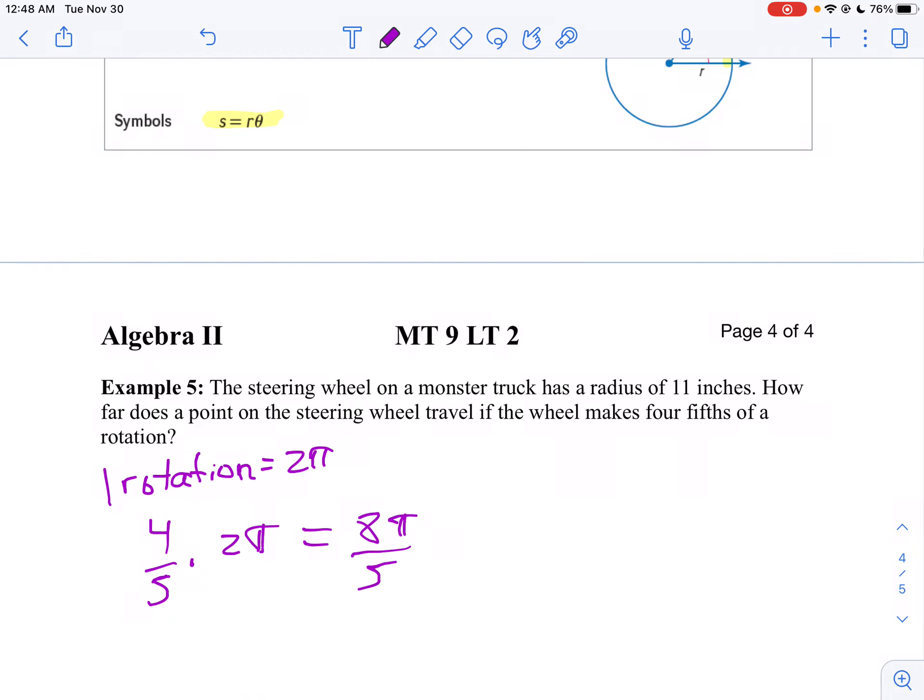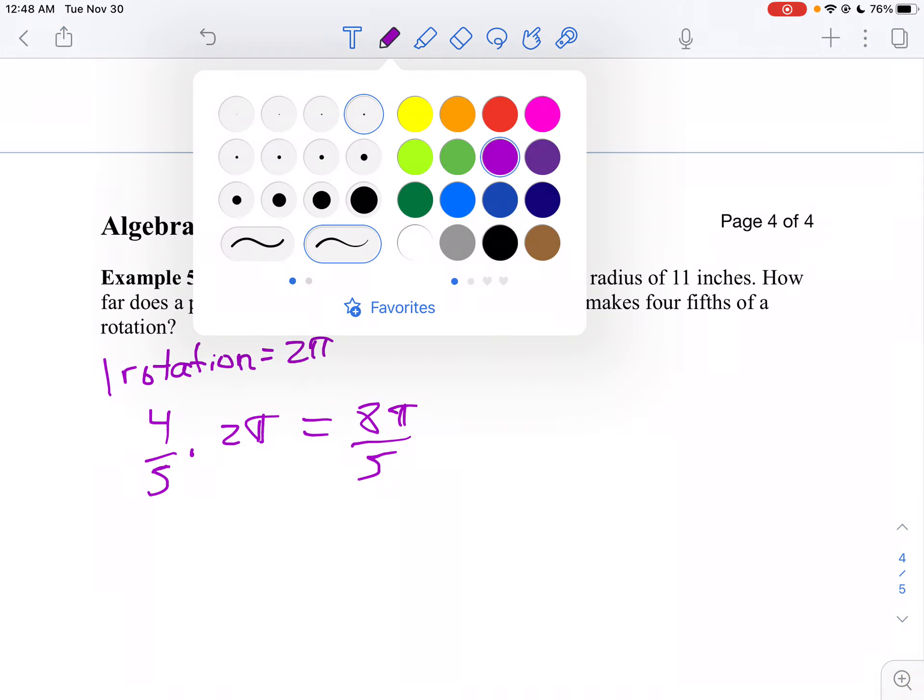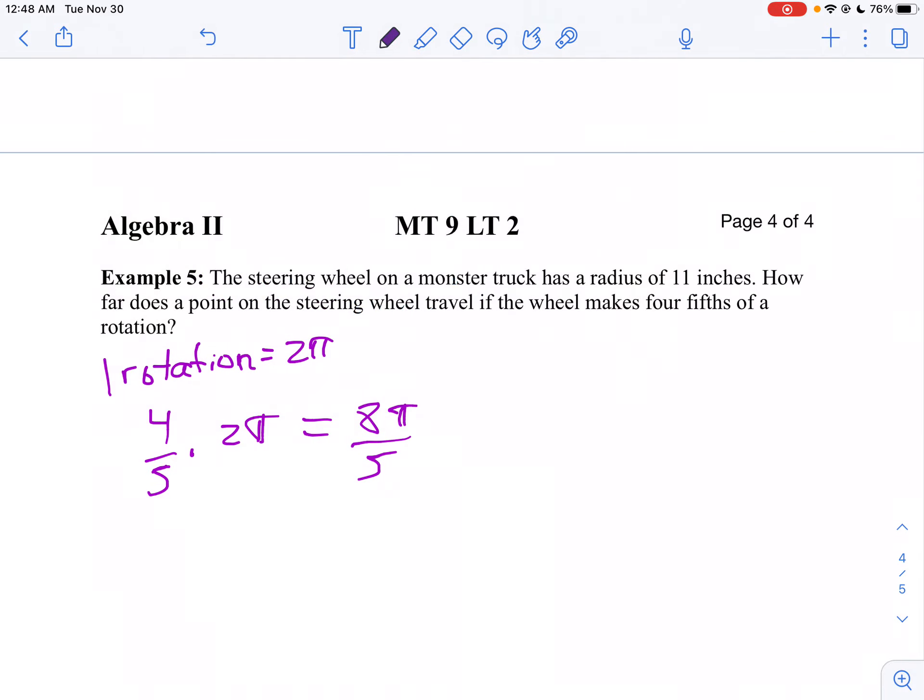Now to find the distance that goes through, we know from what we just did on the previous page, S equals R theta. Well, in this case, my R is 11, and my theta is 8π over 5. And once again, I notice that doesn't reduce, so I get my exact answer is 88π over 5 inches.